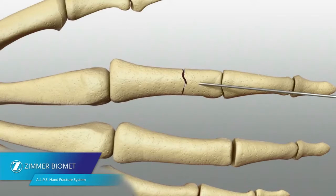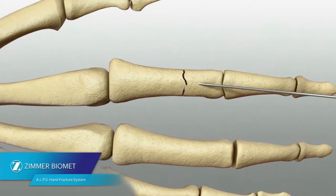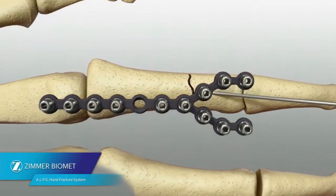Achieve provisional stabilization of the fracture using towel or reduction clamps or K-wires. Determine the appropriate plate shape and length. Plates can be trimmed and shortened to more closely match the anatomy and fracture geometry.